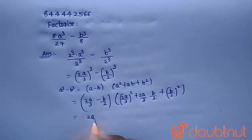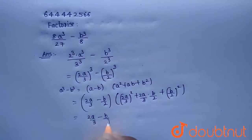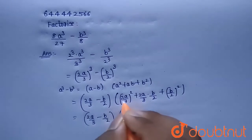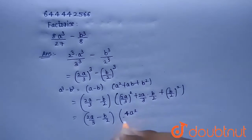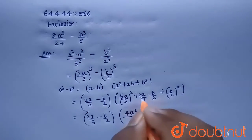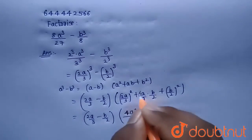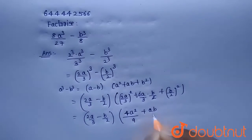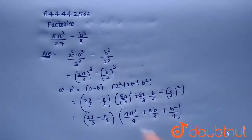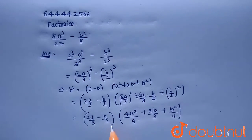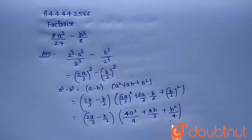Now (2A/3) whole square is 2 square into A square, which is 4A square divided by 9. This 2 will get cancelled and we get AB by 3, and B square divided by 2 square is 4. So the factorization of the given expression is (2A/3 − B/2) multiplied with (4A²/9 + AB/3 + B²/4).